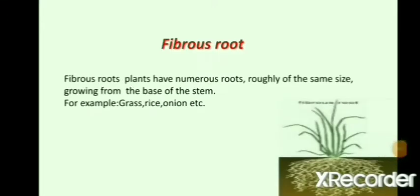Fibrous roots are made up of roots roughly of the same size. The small roots grow out in many directions from the base of the stem. It is the opposite of a tap root system. Fibrous roots hold many soil particles together at the surface of the soil, which is helpful in preventing or reducing soil erosion. Grass, wheat, rice, onion, and maize are some examples of fibrous root system.